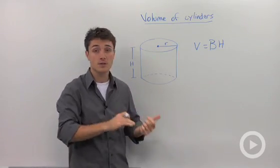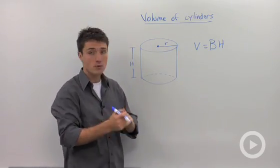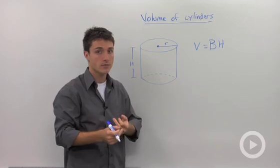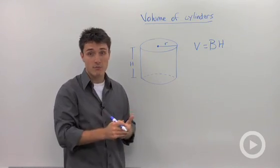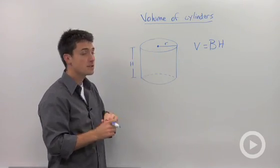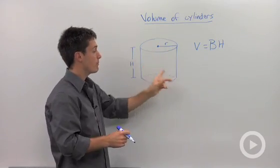Well, the thing that differentiates a cylinder from a prism is that we could have a rectangular prism, a triangular prism, basically any kind of base for a prism. A cylinder is always going to have a circular base.